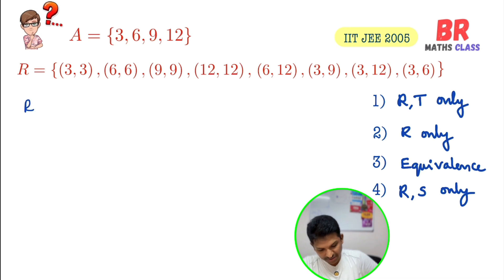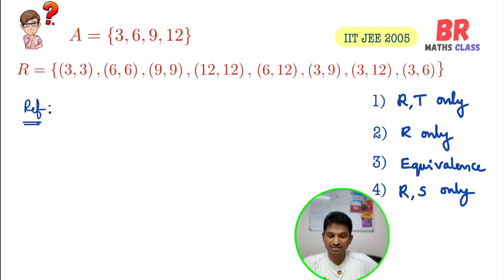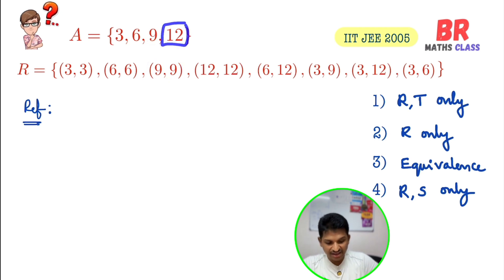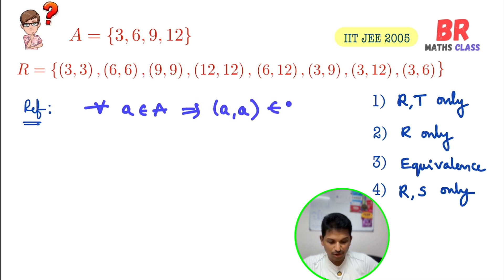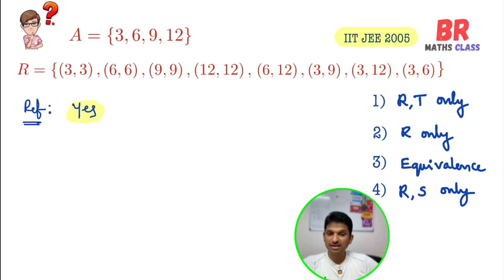First we will check the reflexive part. If you take 3 in set A, order pair (3,3) is there. If you take 6, (6,6) is there. If you take 9, (9,9) is there. If you take 12, (12,12) is there. That means for every a belonging to set A, the order pair (a,a) belongs to the relation. So this relation is reflexive.